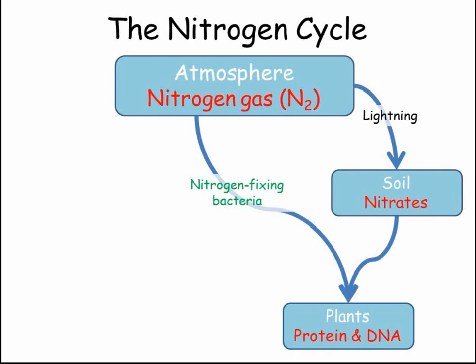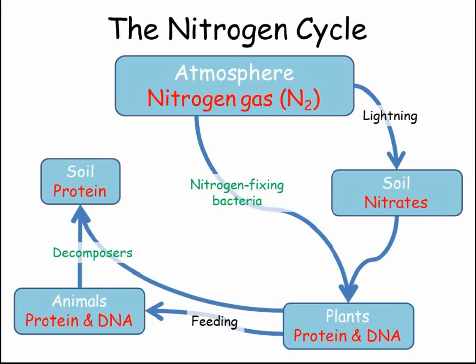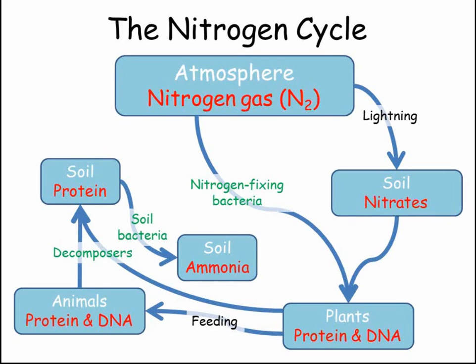However the plant gets its nitrates, they use them to make proteins in order to grow. When a plant is eaten, these nitrogen-containing proteins pass along the food chain in the same way we saw carbon being passed earlier. When either plants or animals die without being eaten, they are broken down by decomposers. The proteins that the plant or animal were made from are broken down by soil bacteria into ammonia. Nitrifying bacteria are then responsible for converting the ammonia into nitrate in the soil, which can be absorbed by plants.